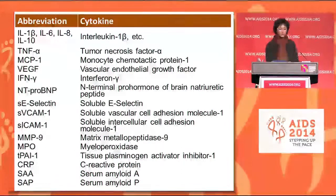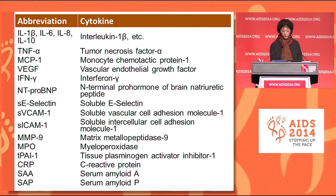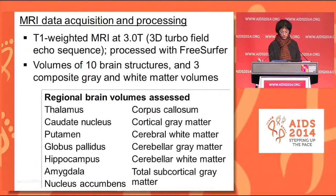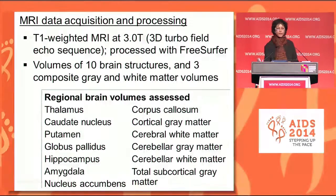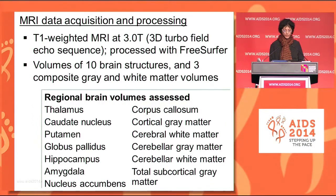This is a list of the 18 inflammatory markers and cytokines that we examined. It includes interleukins, TNF-alpha, MCP-1, VEGF, and so on. Structural MRI data were acquired at 3 Tesla, processed with FreeSurfer, and we looked at the volumes of 10 brain structures and 3 composite gray/white matter volumes.